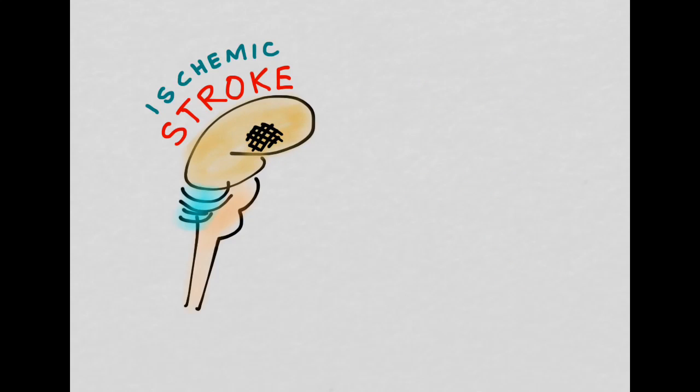So what a stroke is, it's damage to brain tissue, usually caused by some sort of perturbation in the blood supply. Now there are two common causes of stroke. There's the bleeding or hemorrhagic cause and the ischemic cause. The ischemic cause accounts for about 80% of the strokes.